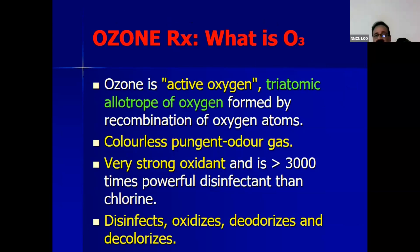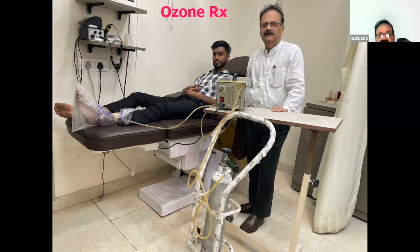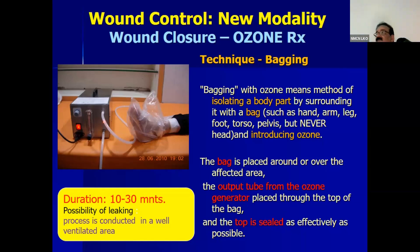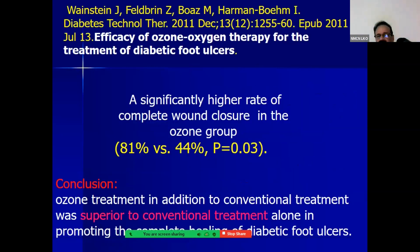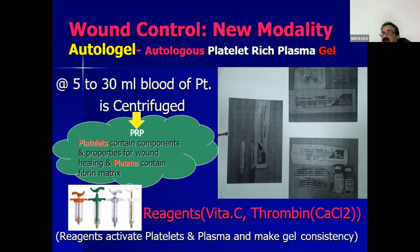Ozone therapy — I have been using this at my clinic. Ozone is an active oxygen triatomic form of oxygen formed by recombination of oxygen atoms. It is a colorless, pungent gas and a very strong oxidant — more than 3000 times a more powerful disinfectant than chlorine. It disinfects, oxidizes, deodorizes, and decolorizes. The technique is known as bagging — a plastic bag is applied around the foot where the wound is, and an outlet pipe from the ozone generator is placed on the upper side, tightly secured so it does not leak. Therapy is given for 10 to 30 minutes. A trial has shown a significantly higher rate of complete wound closure with the ozone group.